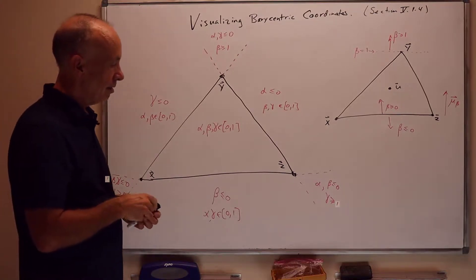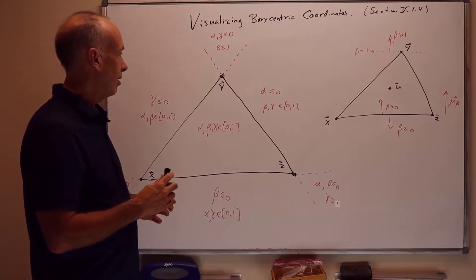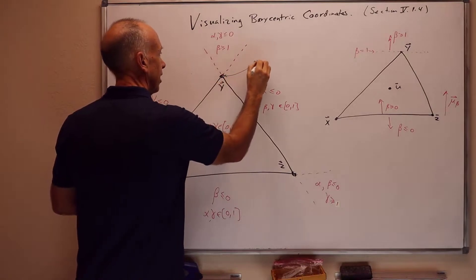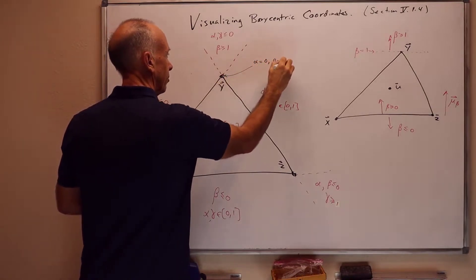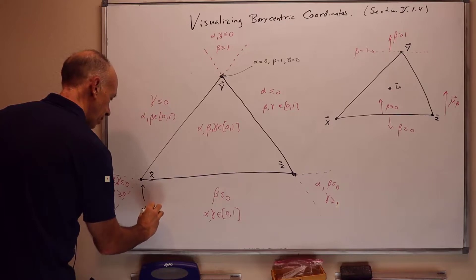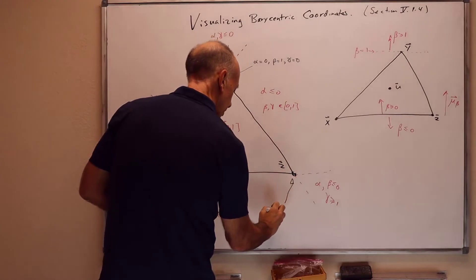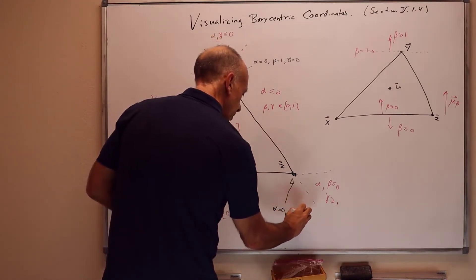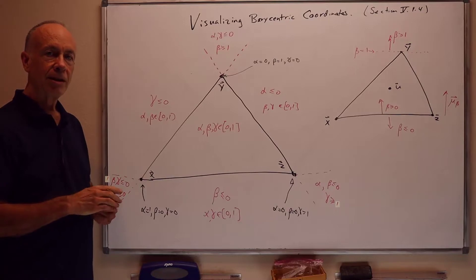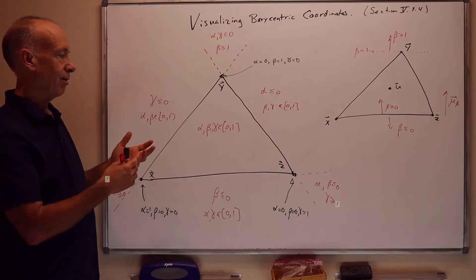This gives us a nice pictorial way to visualize what's happening with barycentric coordinates. Another way to think about it: the barycentric coordinates for y are alpha=0, beta=1, gamma=0. The barycentric coordinates for x are alpha=1, beta=0, gamma=0. The barycentric coordinates for z are alpha=0, beta=0, gamma=1. If you keep these principles in mind, this will let you estimate approximately the barycentric coordinates of points just by looking at where they lie on the triangle.